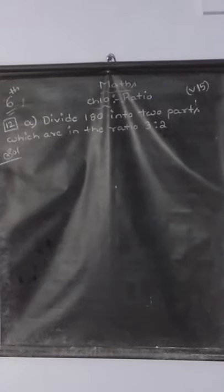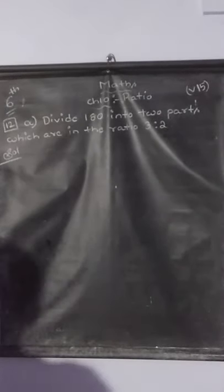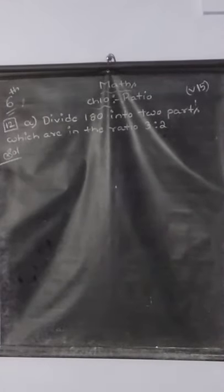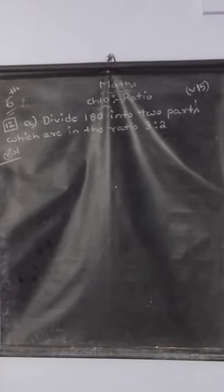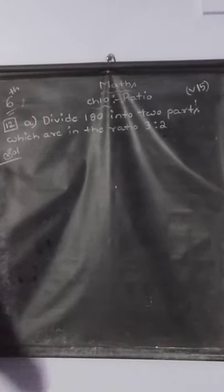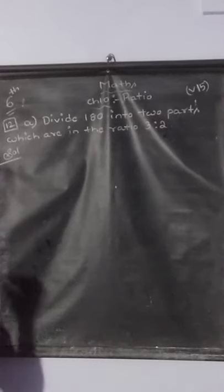Welcome back children. Next is the 12th question, 8th question. Let me read the question. Divide 180 into 2 parts which are in the ratio 3 is to 2.